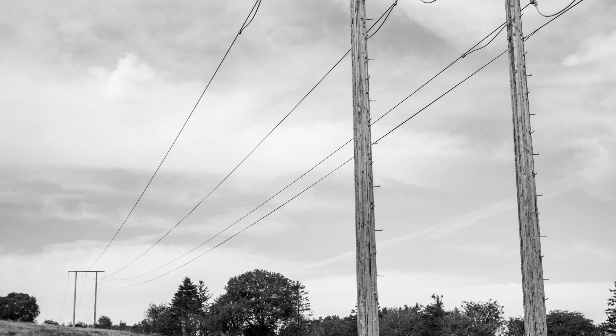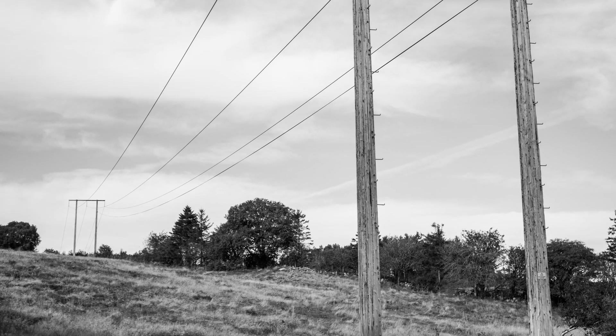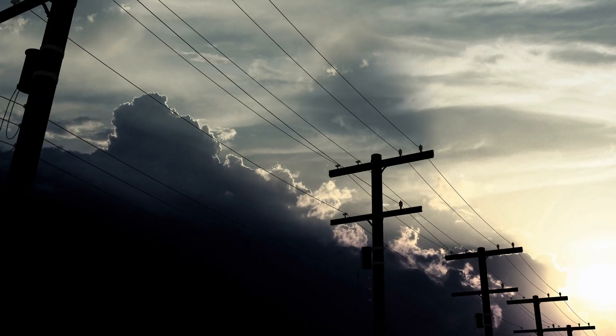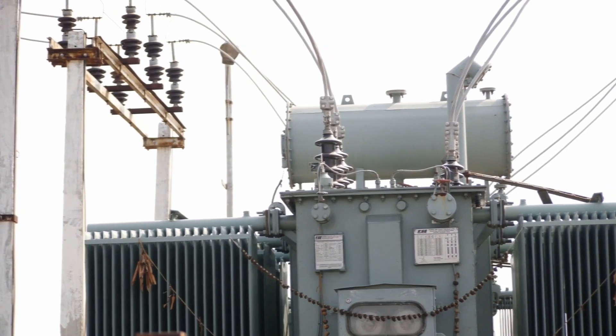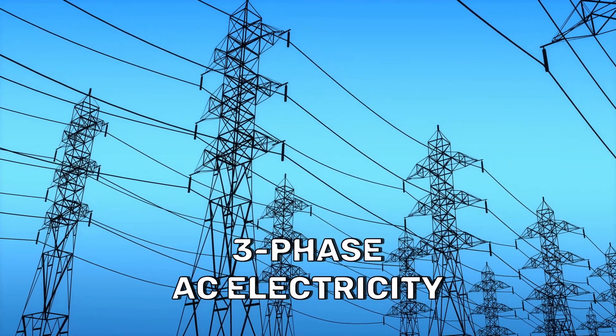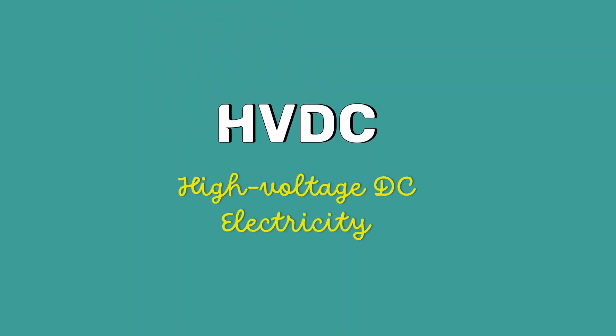The early transmission of electricity was done using DC. Later, the invention of transformers and the concept of three-phase AC electricity almost eliminated the use of DC. Many years later, DC made a comeback as HVDC transmission.